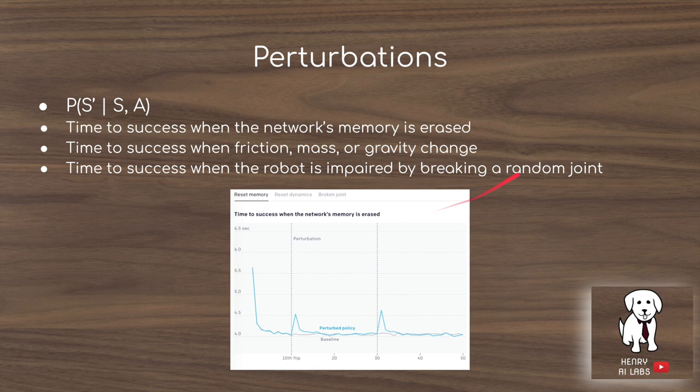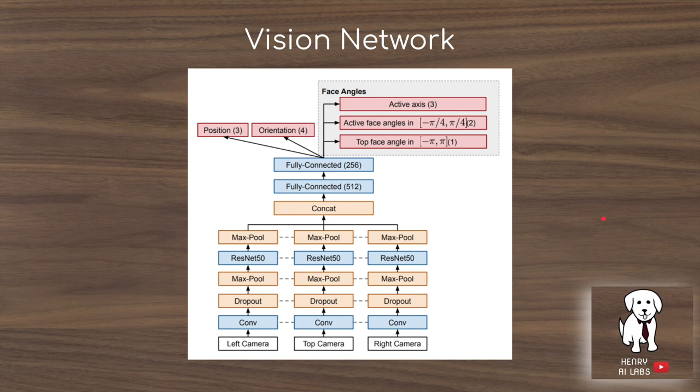Other perturbations tested include: time to success when the network's memory is erased, when friction, mass, or gravity change in the physics dynamics, or when the robot is impaired by breaking a random joint. These perturbations test whether the agent is able to learn the dynamics — specifically the probability of the next state given a current state-action pair.